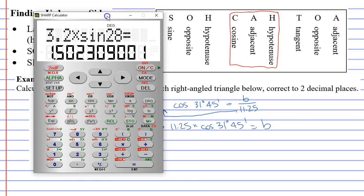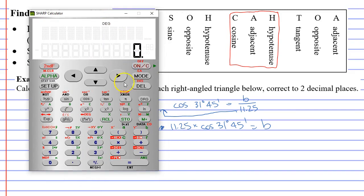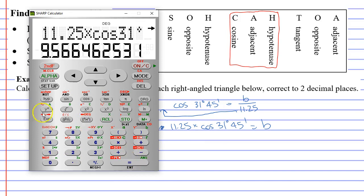Bringing up our calculator that we used before, we're going to clear it, and we're going to go 11.25 times COS 31. Now, to do degrees, we're going to use the DMS button, 45 DMS again. Equals, and to two decimal places, that would be 9.57. We would round up.